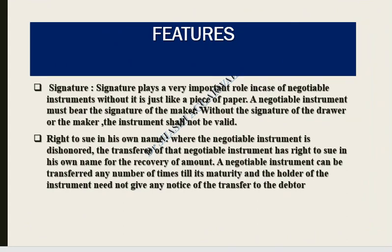Signature plays a very important role in the negotiable instrument. If there is no signature, it is just like a piece of paper with no value. A negotiable instrument must bear the signature of the maker or drawer; without it, the instrument is not valid. When a negotiable instrument is transferred and then dishonored, the holder has the right to take it to court for recovery.